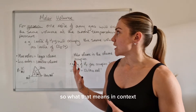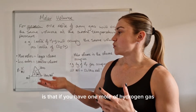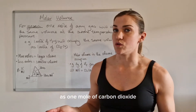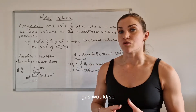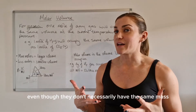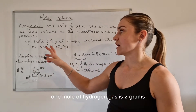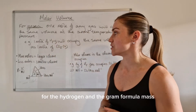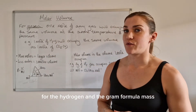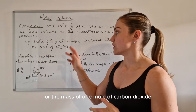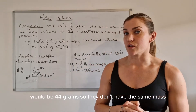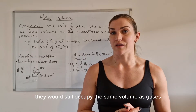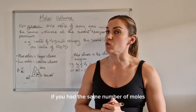So what that means in context is that if you have one mole of hydrogen gas, that would occupy the exact same volume as one mole of carbon dioxide gas. Even though they don't necessarily have the same mass — one mole of hydrogen gas is two grams, and the gram formula mass of carbon dioxide is 44 grams — they would still occupy the same volume as gases if you had the same number of moles.